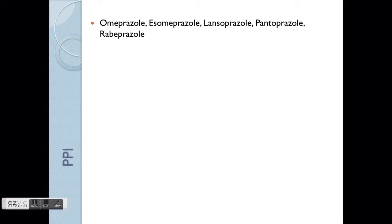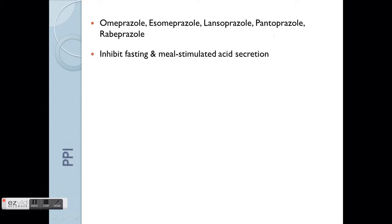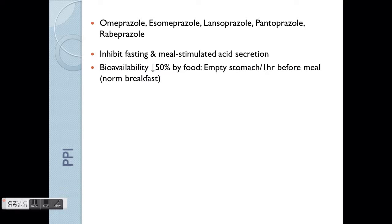There are a few other drugs in the PPI category: omeprazole, esomeprazole — both stereoisomers — lansoprazole, pantoprazole, and rabeprazole. Pantoprazole is also a commonly used member of the family. Because PPI inhibits the final step of proton secretion into the stomach, it has a more non-selective effect, inhibiting both fasting and meal-stimulated acid secretion.